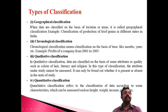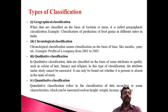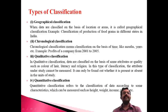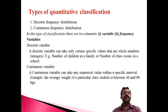The third type is qualitative classification. Qualitative means data that cannot be measured in terms of numbers — for example, beauty, hair color — these cannot be expressed in numbers or values. Data classified on the basis of attributes or qualities such as color, literacy, and religion is known as qualitative classification. The fourth type is quantitative classification, where data is classified according to measurable elements like height, weight, and income.